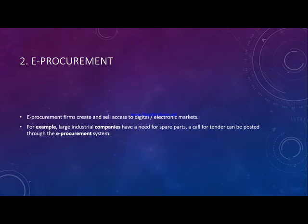The next form a B2B business model can take is known as e-procurement. E-procurement firms create and sell access to digital electronic markets. First, they create a digital market — a place where people can interact and make transactions online. Then they sell access to those digital electronic markets to different parties who might be interested. Other organizations come, get access to that market, participate in business, and make profit.